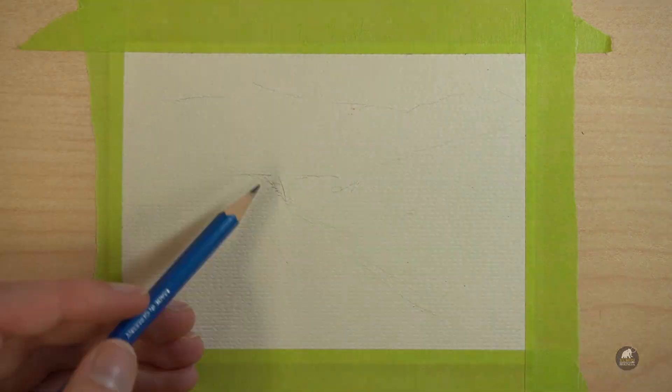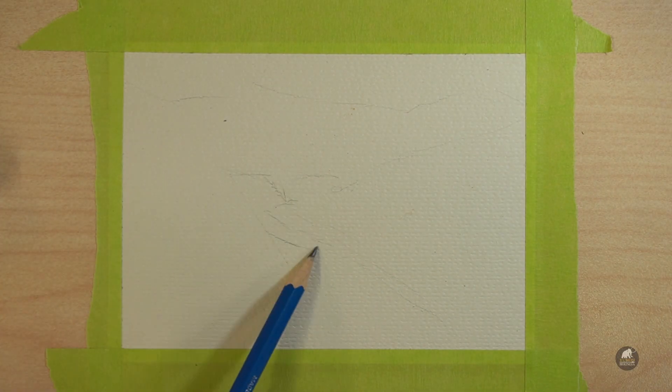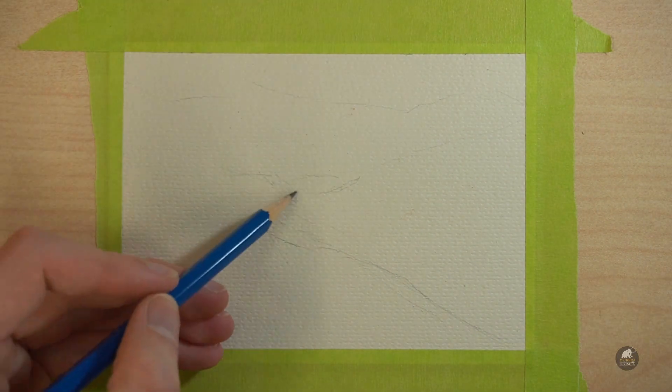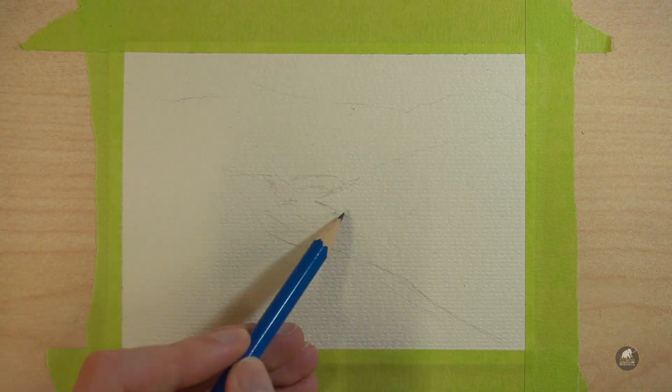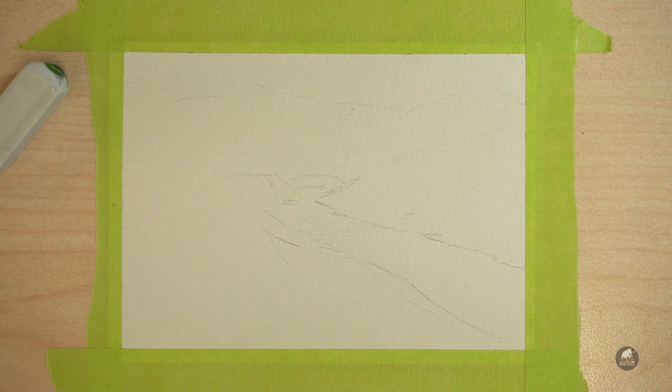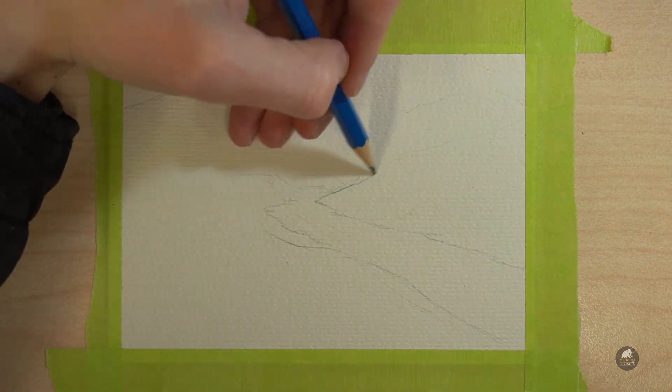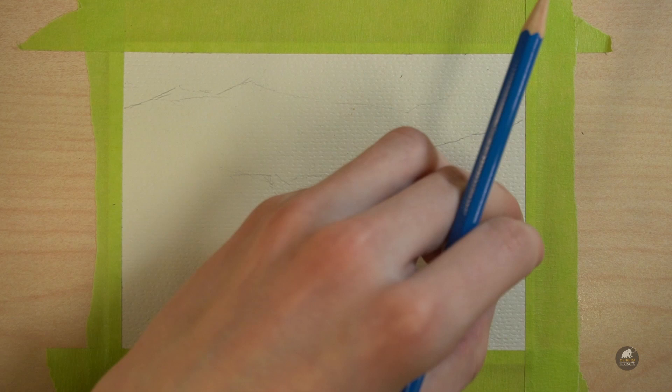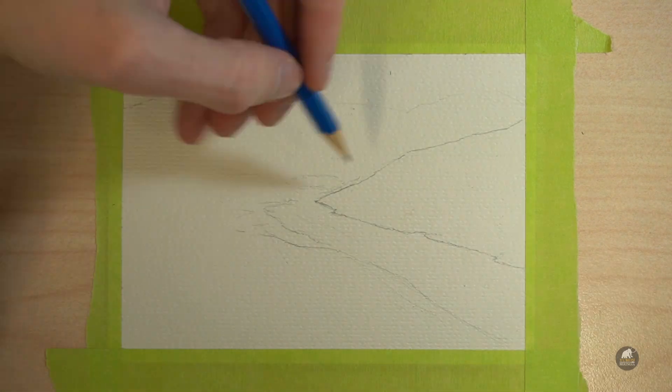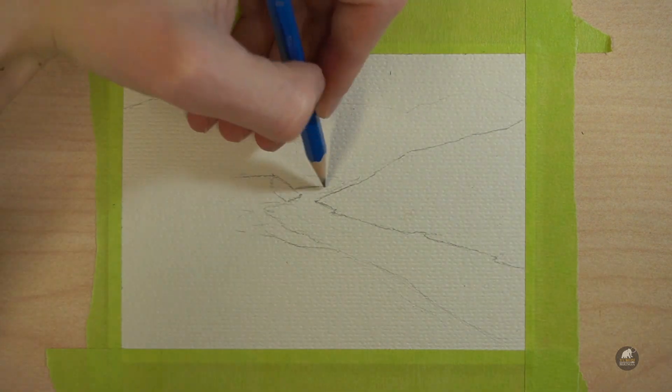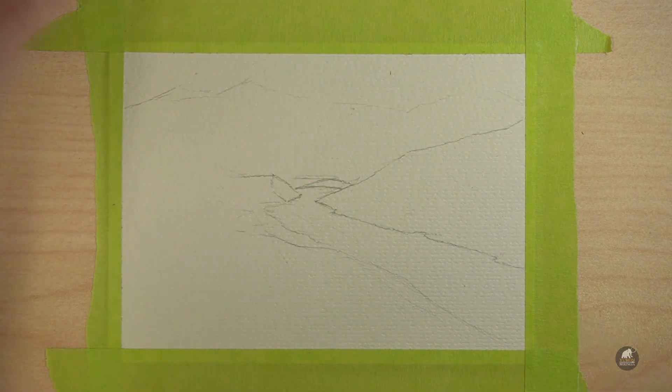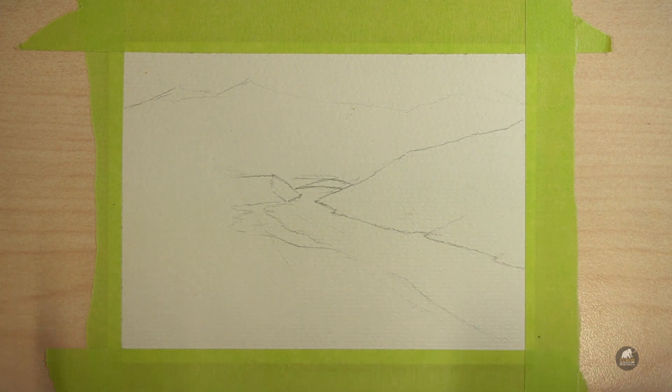So the first thing we're going to be doing, of course, is a pencil drawing, just to outline everything we want to have in our painting. Now the first thing I'm doing is just really roughly drawing in the environment. So you can see I put some really rough lines where I want my little river to be. And I'm kind of just improving those lines and erasing them and making them cleaner as I go.